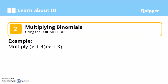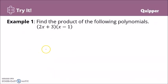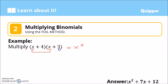Next, let's multiply binomials — polynomials with exactly two terms. For example, (x + 4)(x + 3). We use the FOIL method. F stands for First terms: x times x. O stands for Outer terms — x is the outer term on the left, and 3 is the outer term on the right.